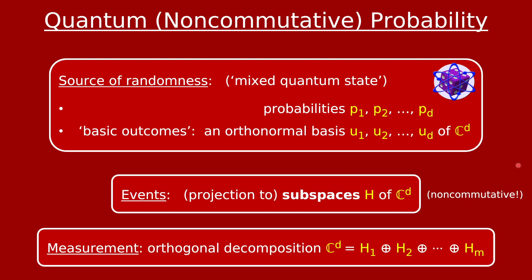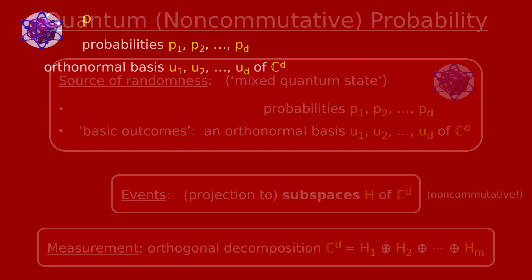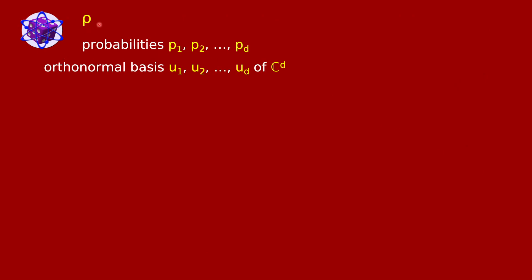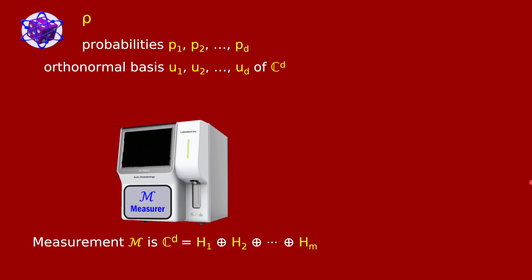Finally, there's also a notion of quantum measurement, and it's an important one. Classical measurement was a partition of the outcomes into disjoint subsets — events. A quantum measurement is a decomposition of d-dimensional space into the direct sum of some number of subspaces h1 through hm. The quantum state is the true state of some quantum particle or particles, and a measurement is like an actual physical device that you can put these particles into and get outputs.